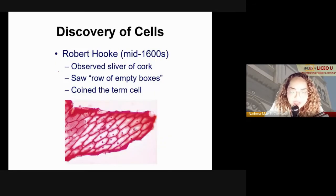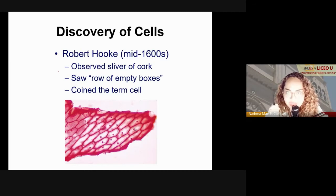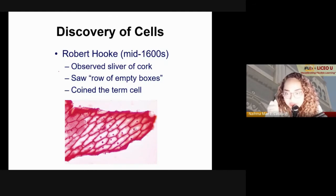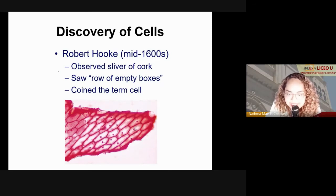The discovery of the cell started with Robert Hooke in the mid-1600s, wherein he used a primitive microscope — microscopes were very popular during the scientific boom of the 1600s. A lot of would-be scientists had this primitive style of microscope. Robert Hooke actually observed the leaves of plants surrounding his estate, and he noticed certain structures which he termed or coined as cells.